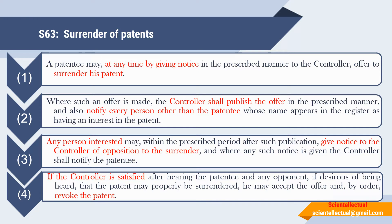Subsection 3: Any person interested may, within the prescribed period after such publication, give notice to the controller of opposition to the surrender. And where any such notice is given, the controller shall notify the patentee. That is, any interested person may give notice opposing the surrender, and that opposition notice will be served to the patentee by the controller.